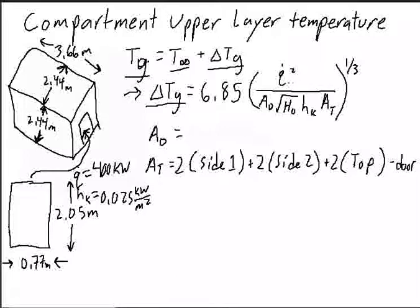Where q dot is the heat release rate from the fire, a naught is your door area, h naught is your door height, hk is the effective heat transfer coefficient, and AT is your total internal surface area of the compartment.